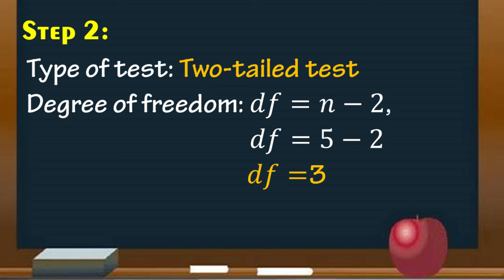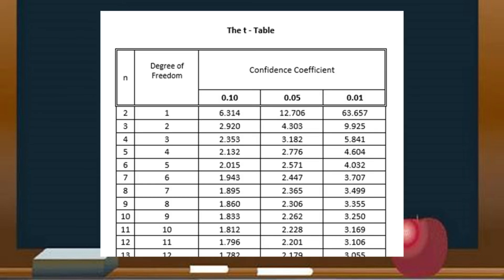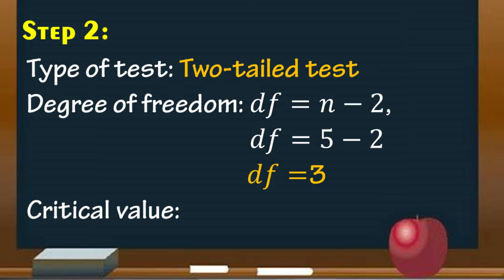And lastly, determine the critical value. We will be using the T-table. All you have to do is look at the degree of freedom and the level of significance. Based on the given problem, the level of significance is 0.05 and the computed degree of freedom is 3, so the critical value is 3.182. Take note that the test is a two-tailed test; hence, the critical values are positive or negative 3.182.